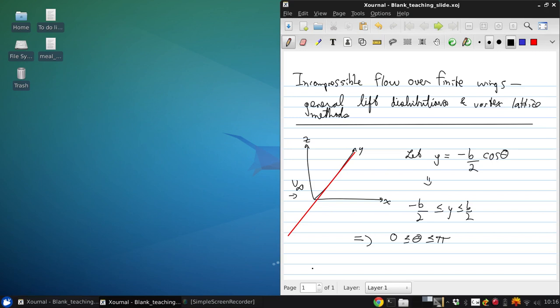Now, if you rewrite the elliptical wing distribution with that transformation, what we get for the circulation is gamma of theta.